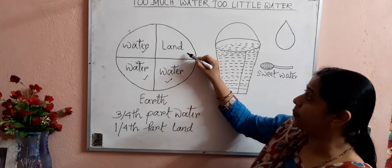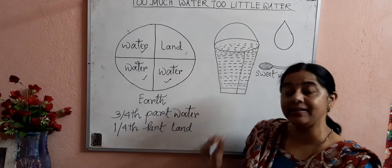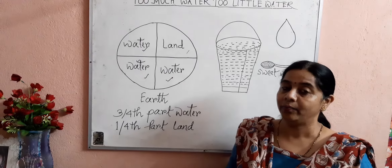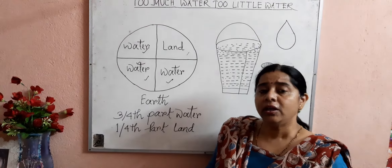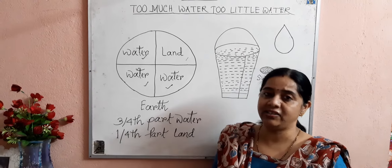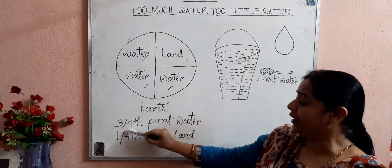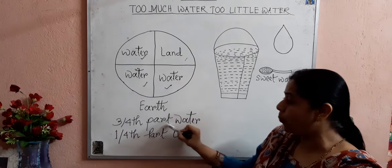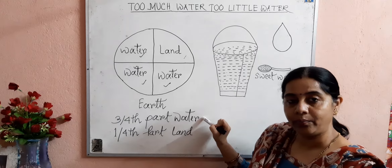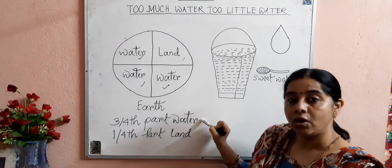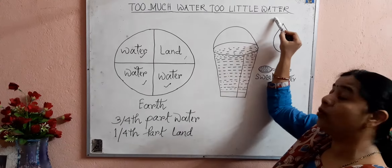Only one part, that is one-fourth, is land. But here one question arises: though three-fourths of the earth's surface is water, why would we say 'too little water'?